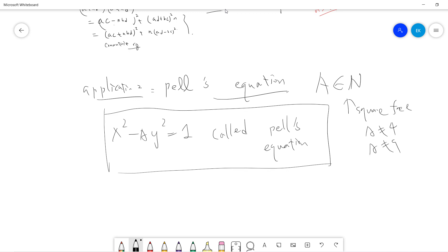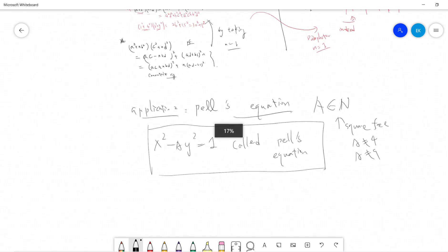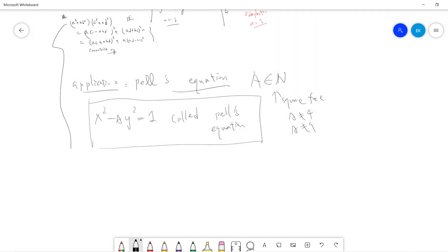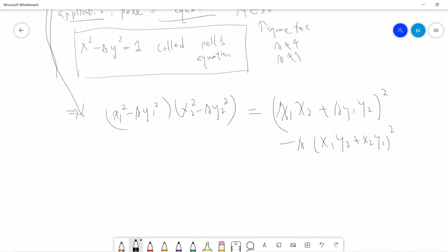If A is very large, to find such x, y will be very difficult. So from this guy's identity, what we have is that (x1²-Ay1²)(x2²-Ay2²). I can take N to be minus A. So I will get (x1x2+Ay1y2)² plus N(x1y2+x2y1)² minus A(x1y2+x2y1)². This tells you that if you have two solutions of Pell's equation, then it can generate a third.